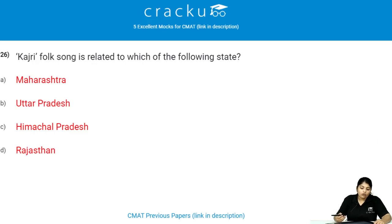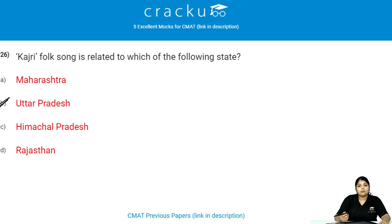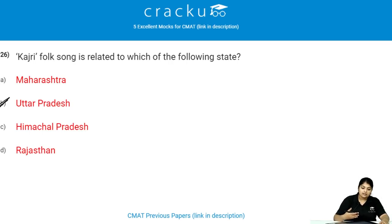Kajari folk song is related to which state? Kajari folk song is related to Uttar Pradesh. It is performed just before the arrival of the monsoon to express joy and happiness.